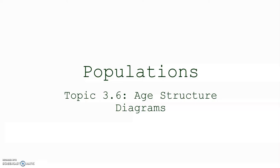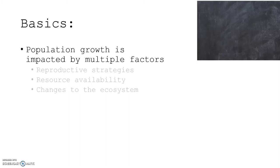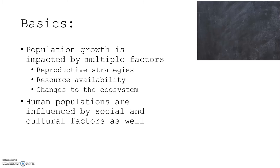This lesson will be on Unit 3, Topic 6, Age Structured Diagrams. Population growth is impacted by multiple factors: reproductive strategies, resource availability, and changes to the ecosystem. Human populations are influenced by social and cultural factors as well, and we'll examine some of those in this lecture.